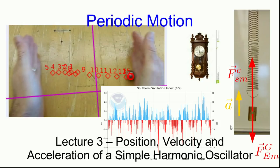Hello, and welcome to Lecture 3 of Periodic Motion in PHYS 11.04. In this lecture, we're going to look at the functions for position, velocity, and acceleration of a simple harmonic oscillator.